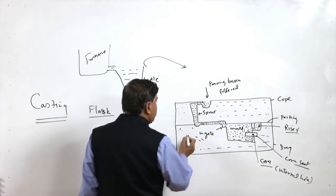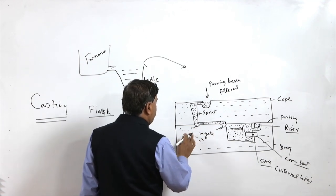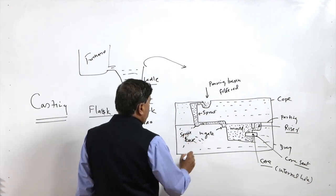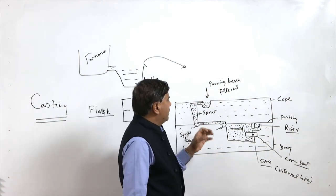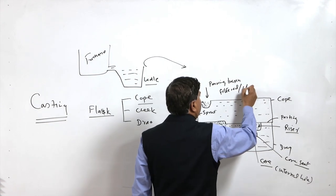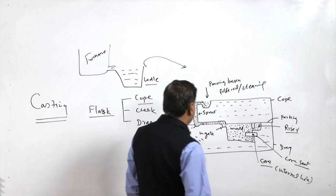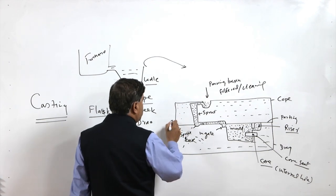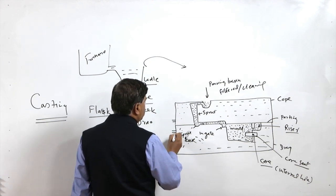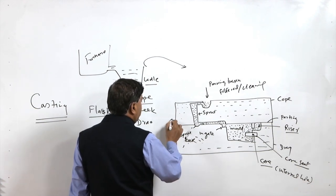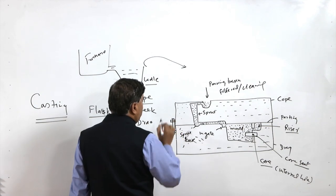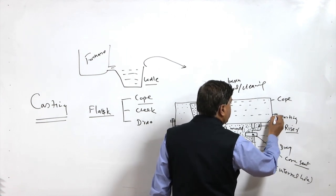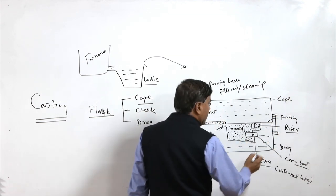These are the various terms: the sprue, sprue base, ingate, pouring basin — which also performs filtration or cleaning of the liquid metal — cope, drag, and parting line. In order to hold the cope and drag together, pins are used so that they keep the flasks aligned as well as held together, so that separation of the mould due to metallostatic pressure after feeding of the liquid metal into the mould is avoided.